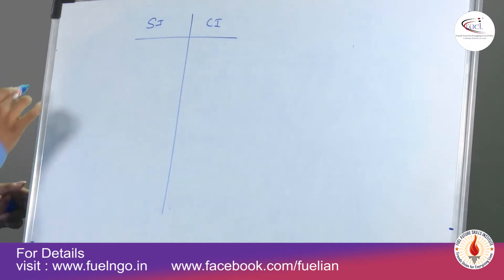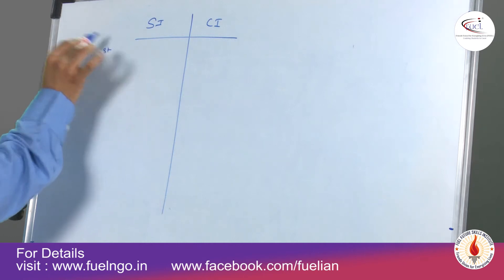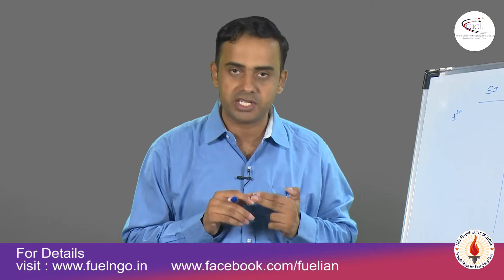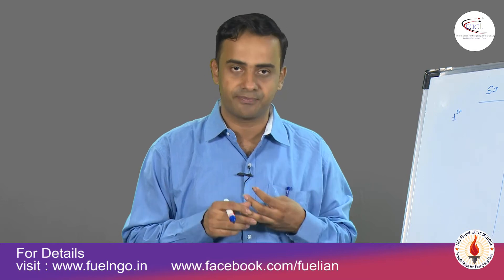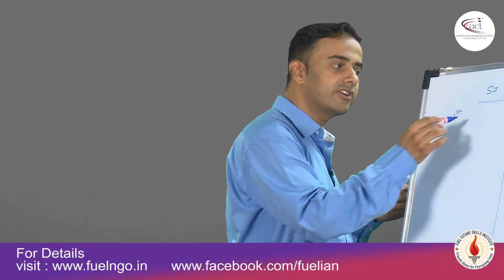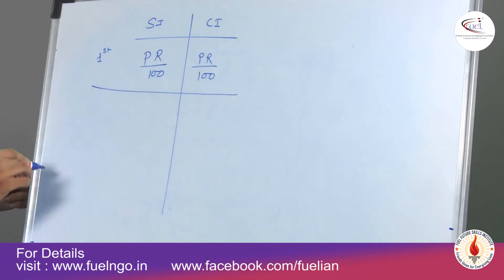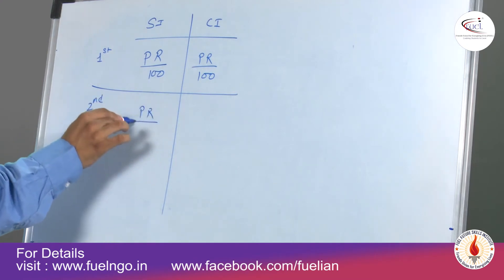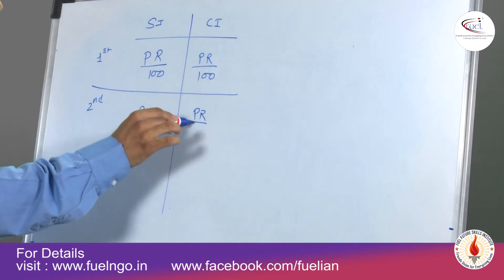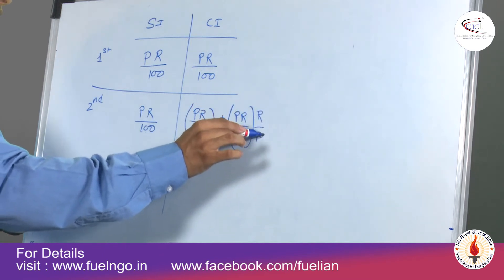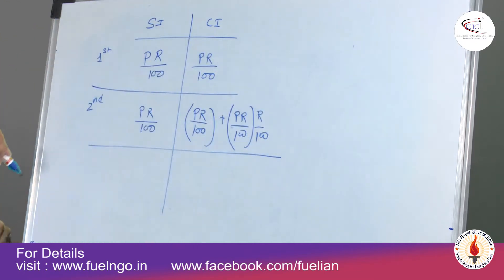You have simple interest and compound interest. At the end of the first year, I use three major terms: P, which is the principal (also called present value); R, which is the rate of interest, always given per annum whether mentioned or not; and T, the time, always given in years. Simple interest at the end of the first year is P into R by hundred. Compound interest is also P into R by hundred. At the end of the second year, for SI this remains P·R/100, plus you also get interest on the previous interest at R percent.